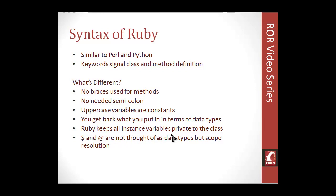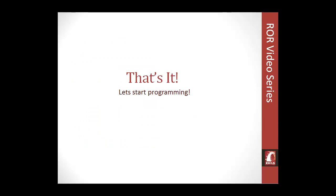Ruby keeps all instance variables private to the class. The dollar sign and the at sign are not thought of as data types but as scope resolution. When you declare a variable there's no symbol in front of it, but a dollar sign prefix indicates a global variable. In the next video, I'll be showing you more actual programming. We're going to use a program called Ruby Installer, which will give us another program called Interactive Ruby — a command line interface where we can run Ruby code. See you in that video.